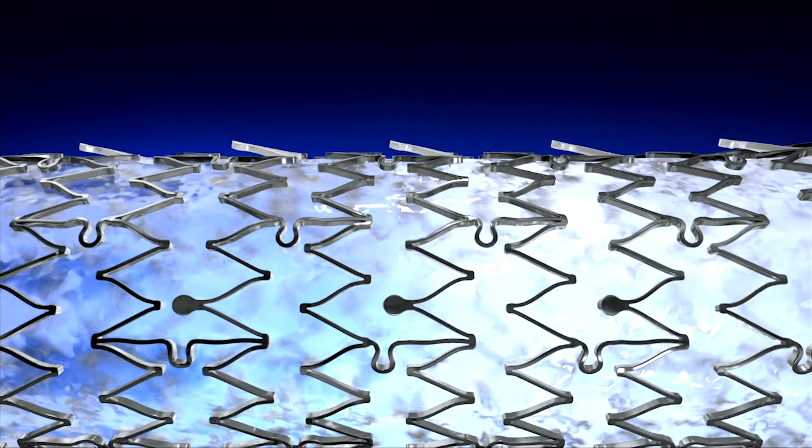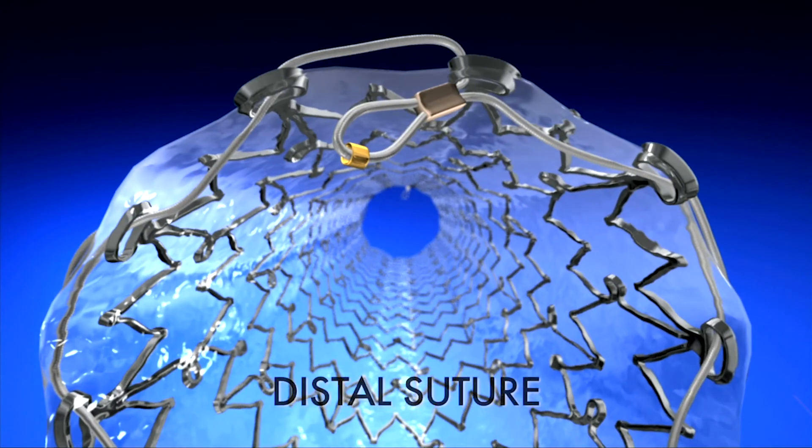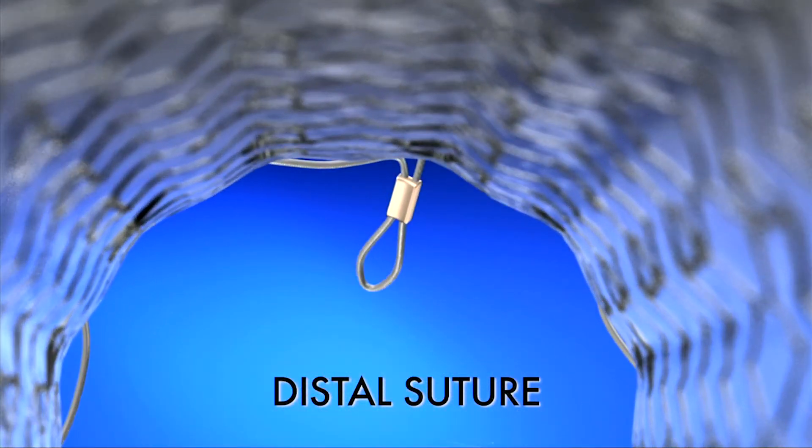Proprietary anti-migration struts run throughout the stent and are designed to reduce stent migration. A metal proximal and distal suture provides a means for distal and proximal repositioning and removal of the stent immediately post stent placement.